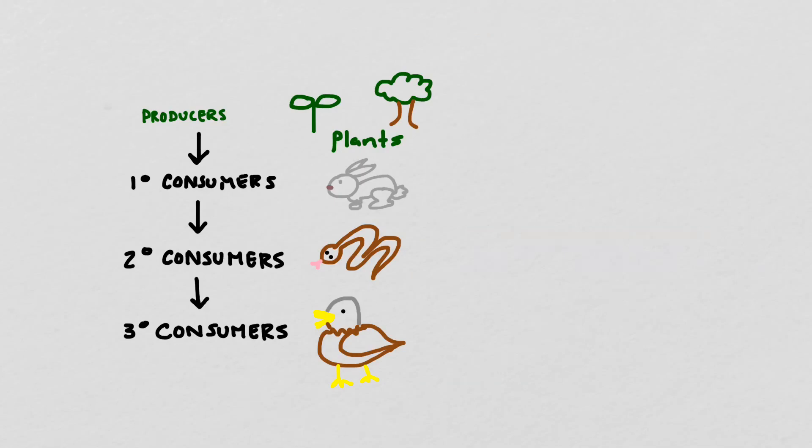We should also think about the energy flow that occurs in most ecosystems. With very few exceptions, such as deep-sea ocean vents, the energy in most ecosystems comes originally from the sun.